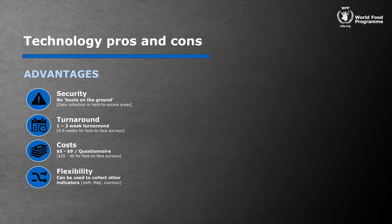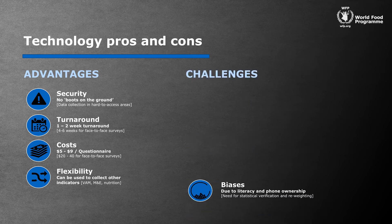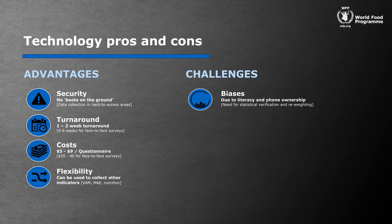We're now working on collecting nutrition indicators as well. Now, of course, there are a number of challenges, and the biggest challenge is understanding bias with phone surveys. Illiteracy and phone ownership resources are biased. Who owns the phone in the household? Is it the man or the woman? Do poor people have access to cell phones? This means that there's always some statistical verification that's needed at the end of the analysis.